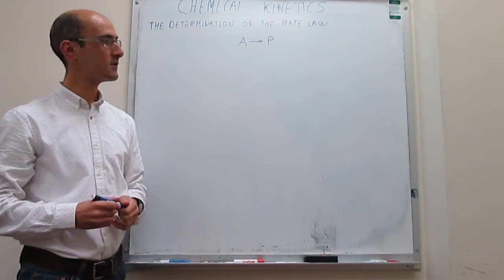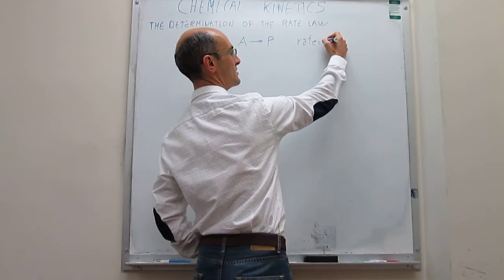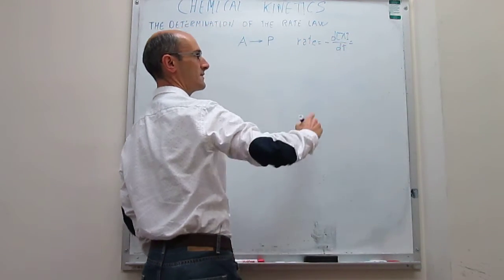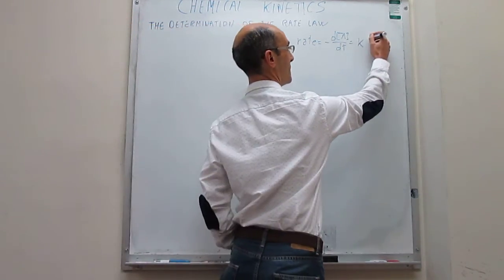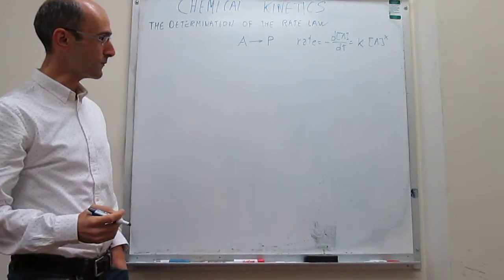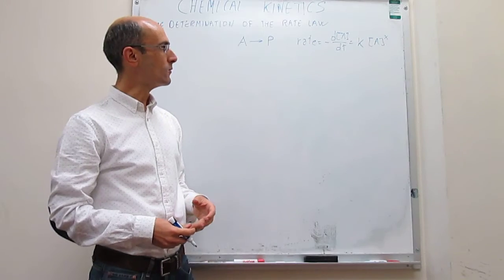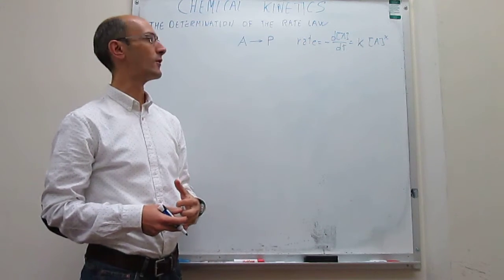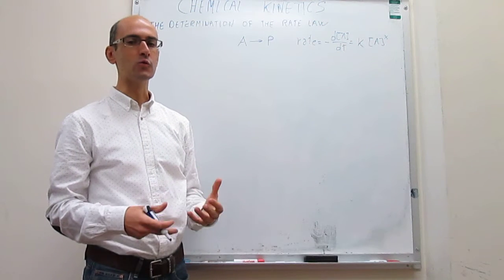For a reaction A giving products, we can always write the rate law as: the rate, defined as the change in concentration of reagents as a function of time with a negative sign, is equal to a proportionality to the concentration of that reagent to some power x that you have to determine. This expression is very useful in the integrated version — if you know the rate constant and the order of the reaction, you can figure out how the concentration of reagents disappears as a function of time. Those were the integrated rate laws.